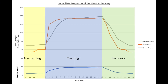This graph shows the immediate physiological responses for the heart to training. A rise in stroke volume and heart rate ultimately causes an increase in cardiac output. During the recovery phase after exercise is complete, both heart rate and stroke volume slowly return to resting levels, which naturally also brings cardiac output back to resting level.